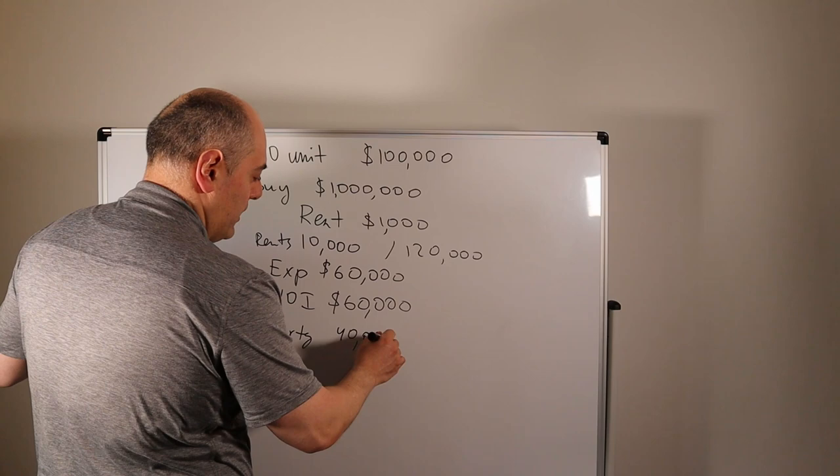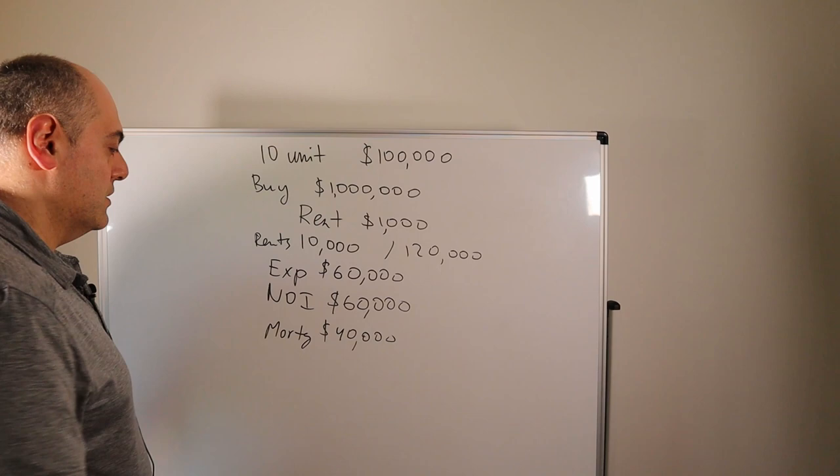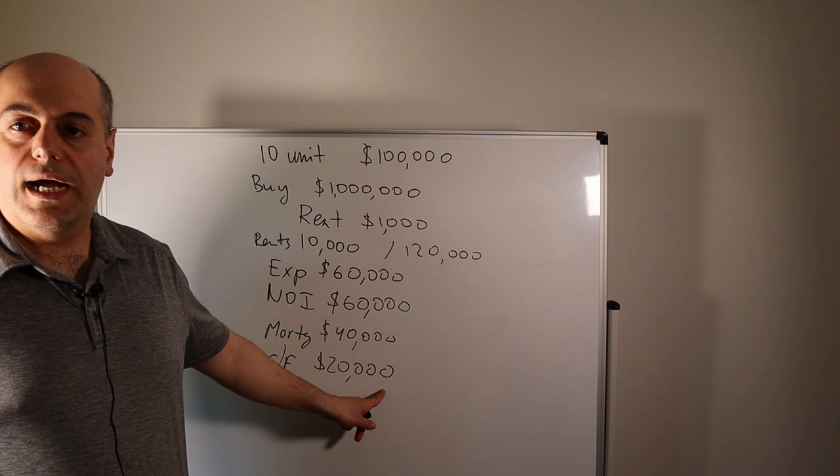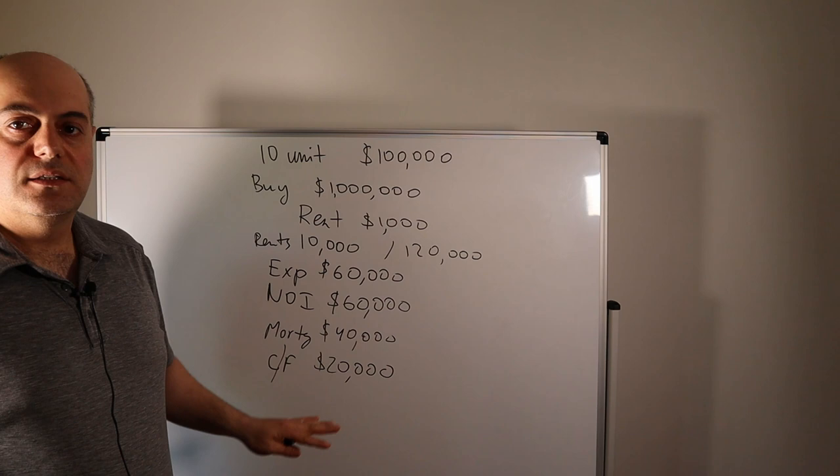Now you have twenty thousand dollars left. So twenty thousand dollars is your free and clear cash flow. This is why you invest in real estate. This is your income. You buy the deal to generate income.